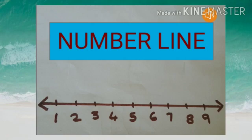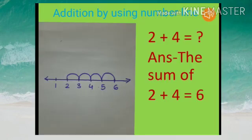What is a number line? Here you can see a number line which has numbers starting from 1 to 9. Now we can carry out addition by using the number line.